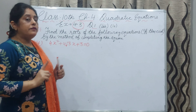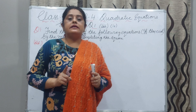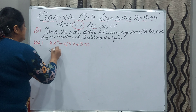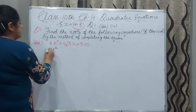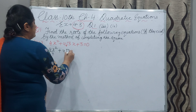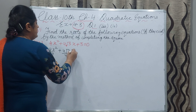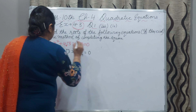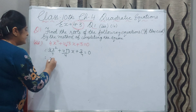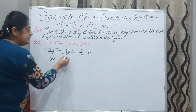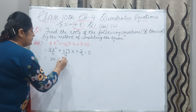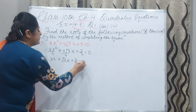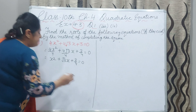You have to divide the whole equation by the coefficient of x square. So: 4x² / 4 + 4√3 / 4 · x + 3/4 = 0. The 4 and 4 cancel, giving x² + √3·x + 3/4 = 0.